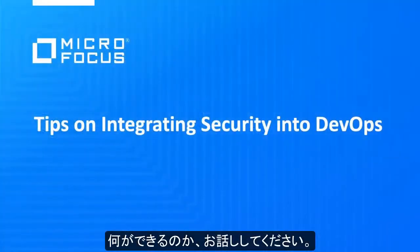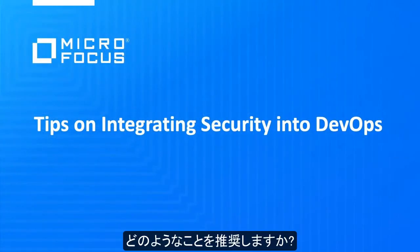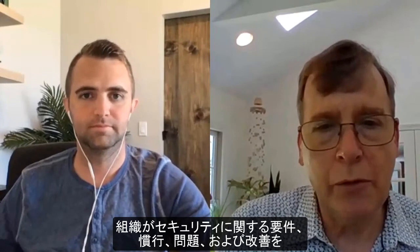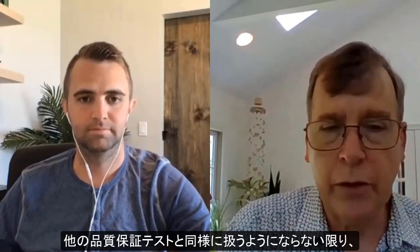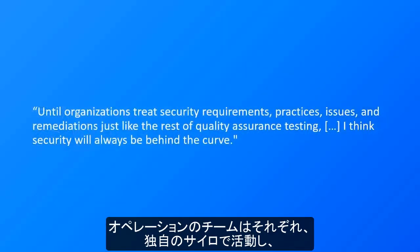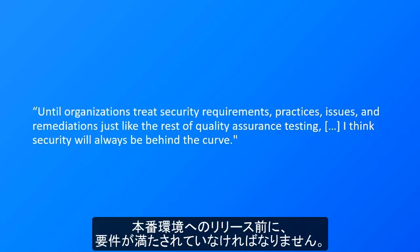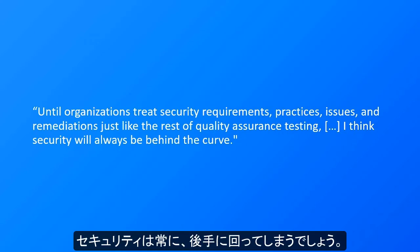Let's talk about how we can help ensure that security isn't left out of DevOps. What would be some of your recommendations? Even though there's a promise of collaboration that DevOps gives us, many times dev teams and security teams and ops teams operate in their own silos and have their own agendas and tasks. Until organizations treat security requirements, practices, issues, and remediation just like quality assurance testing — a requirement that must be met before you push a release into production — I think security will always be behind the curve.